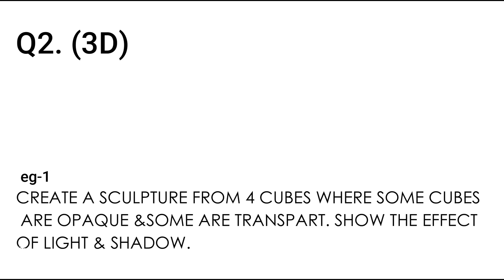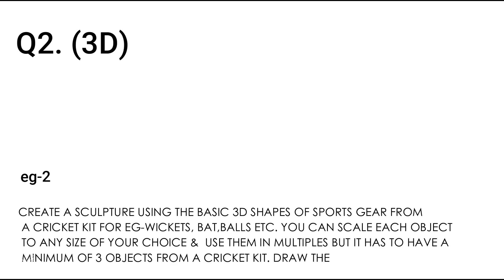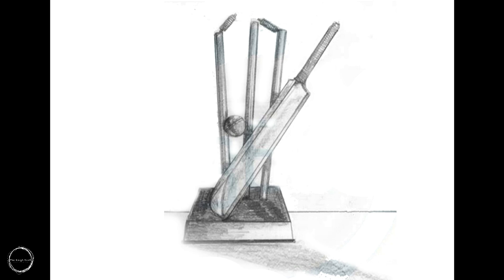The next is a 3D question which again carries 35 marks. Let's look at the examples. The first example is: 'Create a sculpture from four cubes where some cubes are opaque and some are transparent — show the effect of light and shadow.' Another example: 'Create an interesting sculpture using the basic 3D shapes of sports gear found in a cricket kit, for example wickets, ball, etc. You can scale each object to any size of your choice and use them in multiples, but it has to have a minimum of three objects from a cricket kit. Draw the effect of light and shadow on your composition.' Here they judge your ability to sketch a given object proportionately and render it in a visually appealing manner.